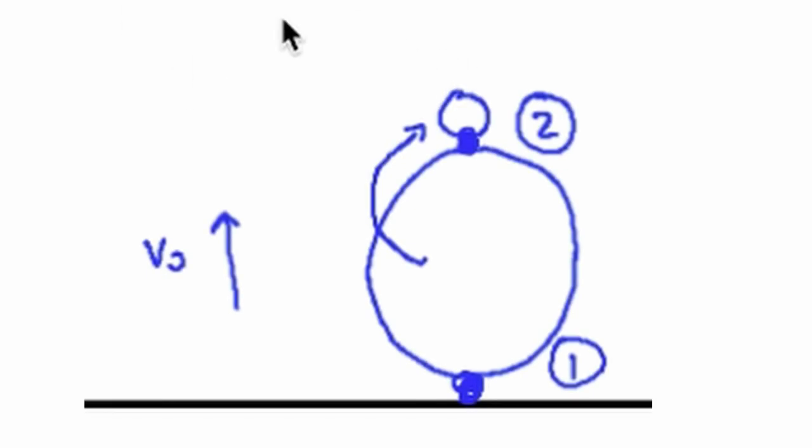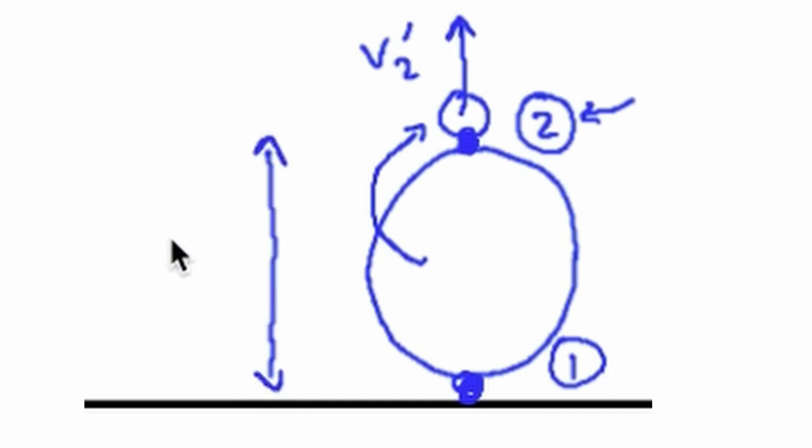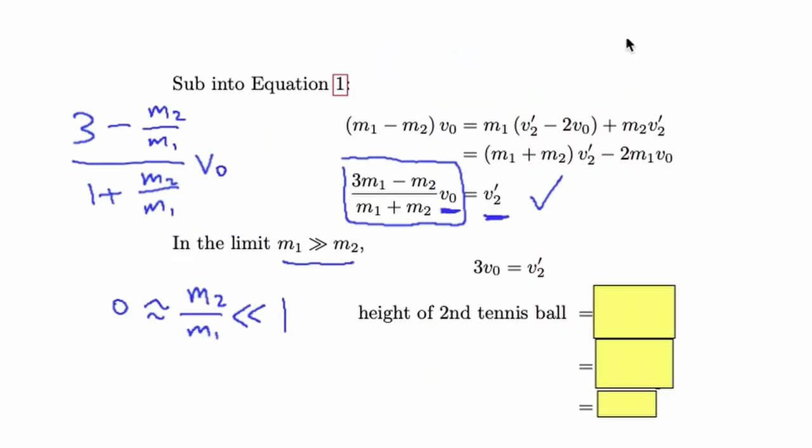Going back to the diagram we see that we have successfully found the results of the second collision in that we have found the velocity at which the second ball, v2', would move upwards at. We know that the initial height of the ball is d so all that remains is to do some simple kinematics to get the maximum height that the second tennis ball would reach. That concludes our solution and now let's discuss some insights which we can draw from this question.